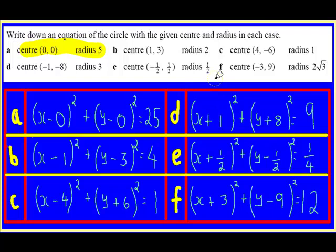Question f is slightly different in that the radius is 2 root 3. And in order to do this we will revisit your surd work that you would have done earlier. 2 root 3 squared is actually the same as 4 times 3 which is your 12.